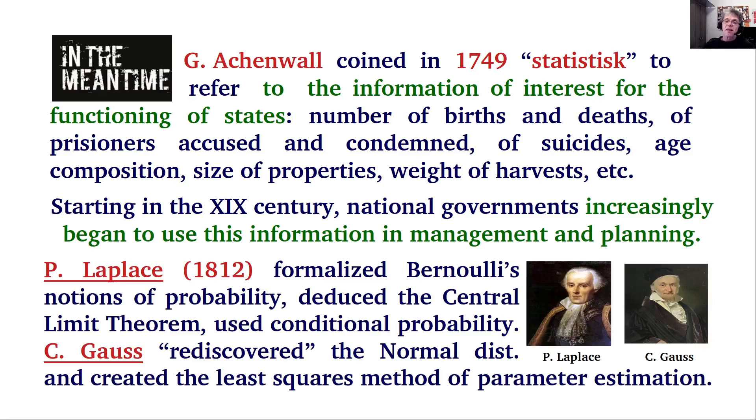Pierre Laplace, one of the most important mathematicians of the 19th century, published in 1812 a book called Theory of Probability, in which he formalized Bernoulli's notion of probability. He deduced the central limit theorem, which we will see in coming videos. He used conditional probability, and more importantly, he deduced what we now call Bayes' rule in a formal and proper way without knowledge of the previous publication of Bayes' paper.